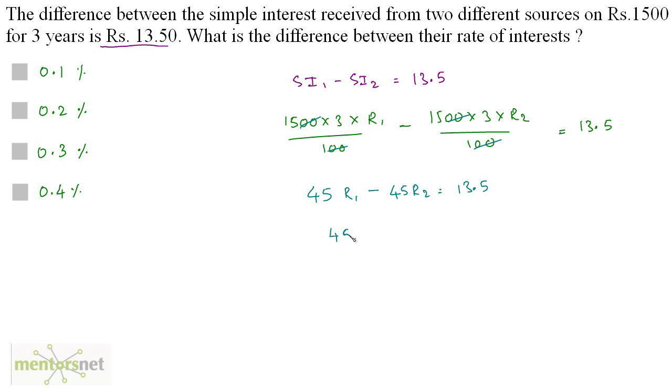Taking 45 common, so I have 45 R1 minus R2 is equal to 13.5. Therefore R1 minus R2 is equal to 13.5 by 45. This could be written as 135 by 450. Dividing both the numerator and denominator by 45, this is basically 3 by 10 and that's 0.3%. And we have found out the difference. So Option C is the correct answer.